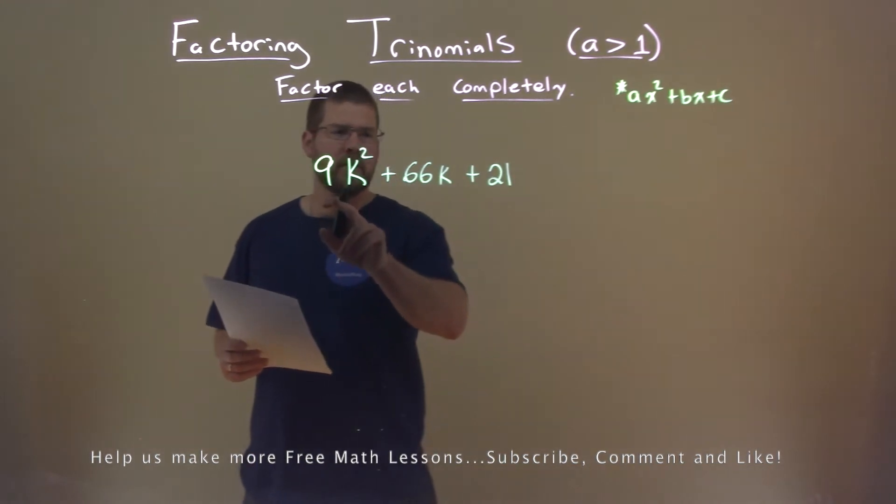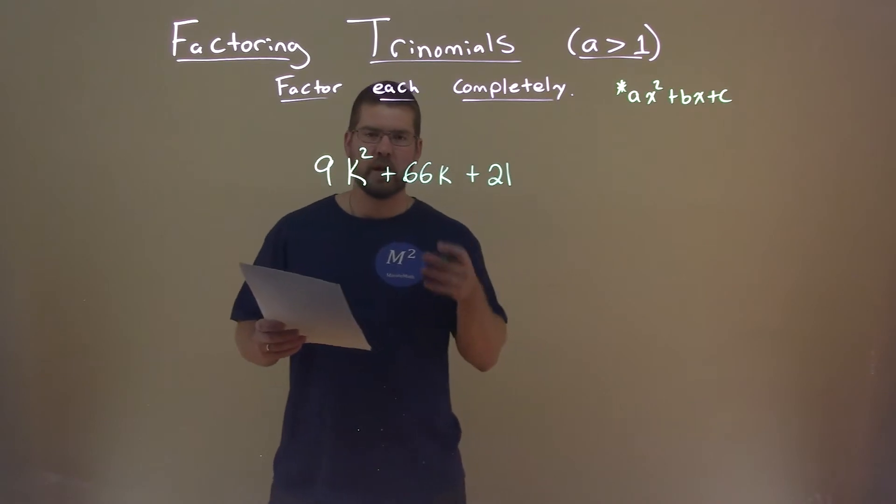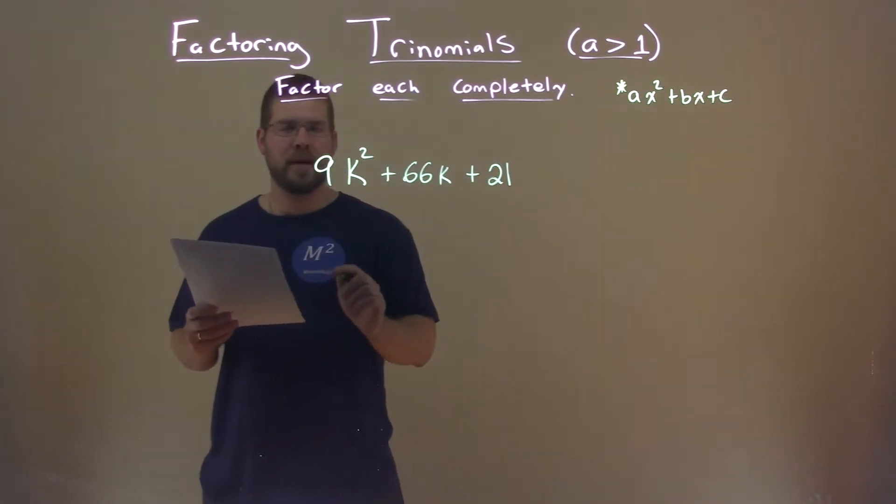First thing I'm noticing is that all three of these values, a, b, and c, are divisible by 3. So I'm going to try to simplify this if I can work with smaller numbers. I'm going to pull out a 3 out of all of them.